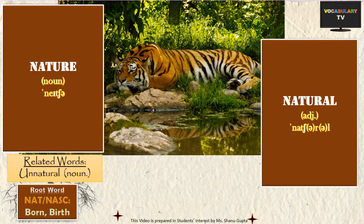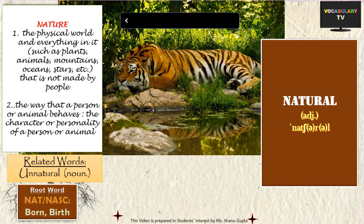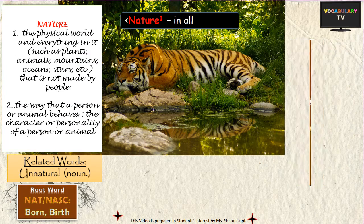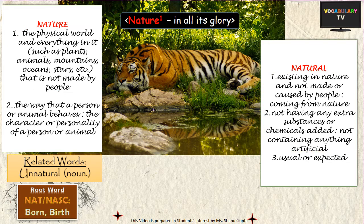Another common derived word is 'nature,' which every English speaker knows about. Nature, as we know it, is the collective body of plants, animals, landscapes, etc., and this is the essence of the word.